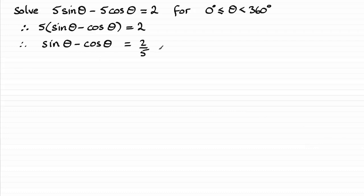Now I'm going to square both sides. So squaring the left-hand side gives me just sinθ - cosθ all squared, and squaring the 2/5 gives me 4/25.